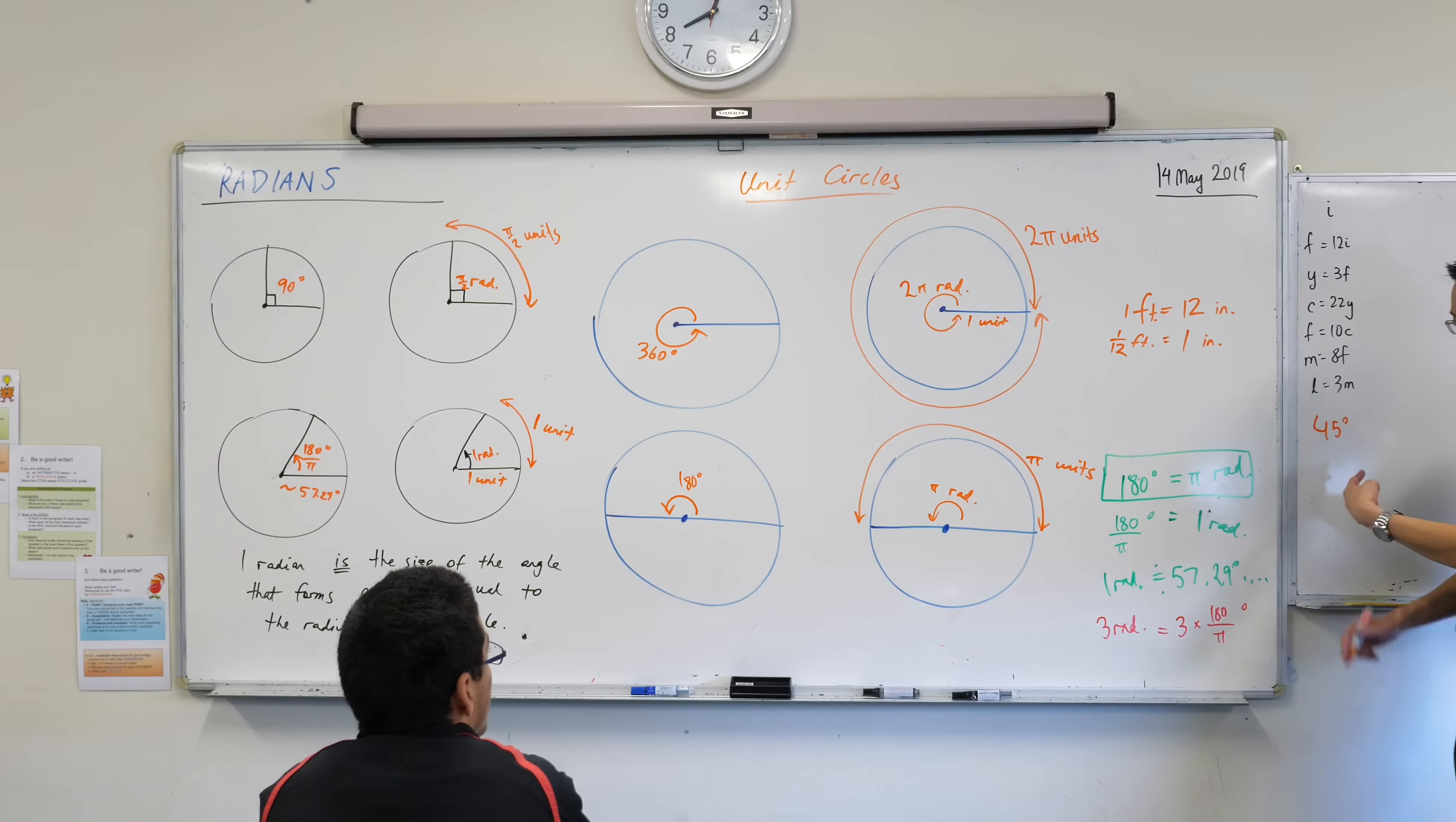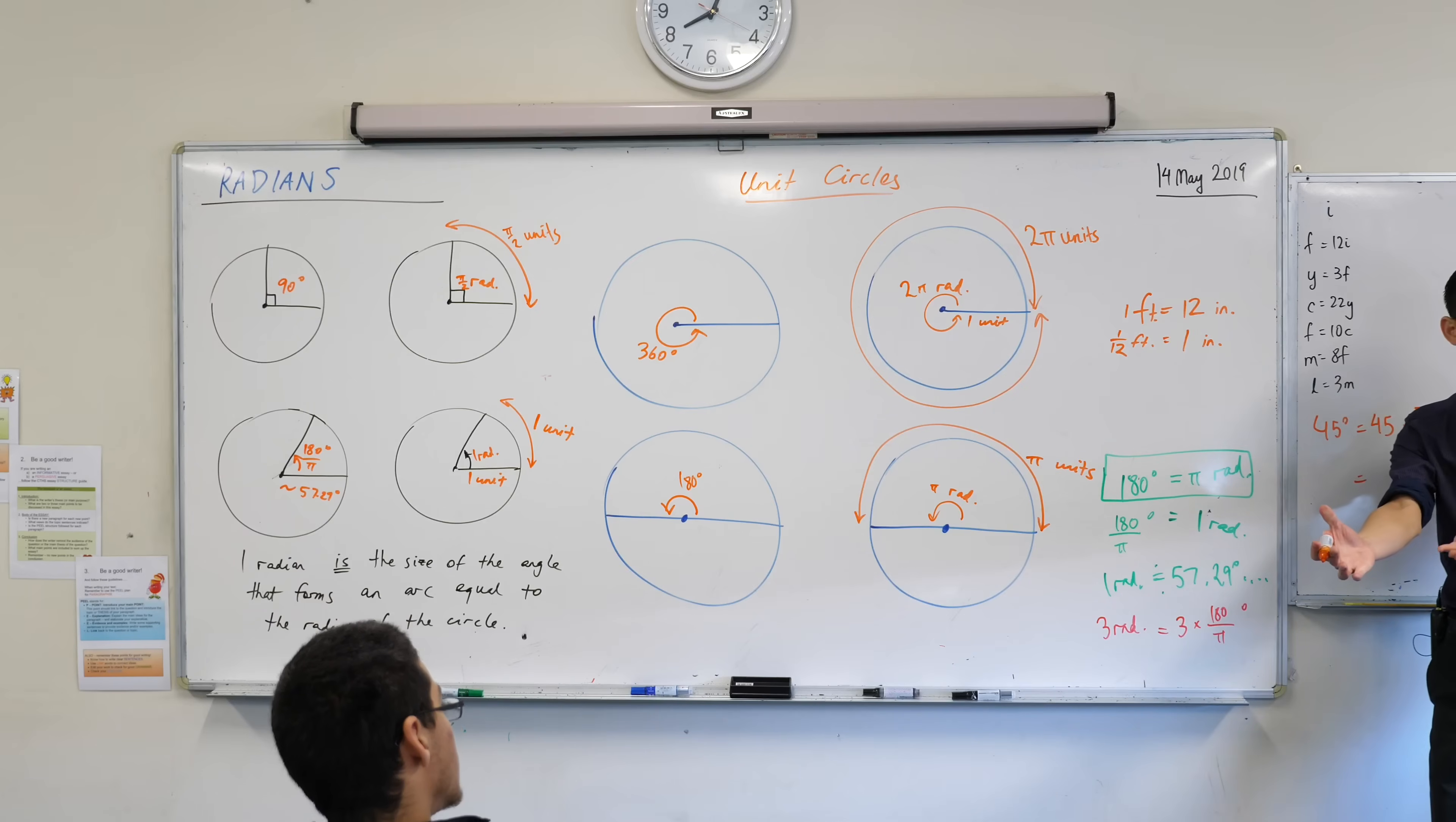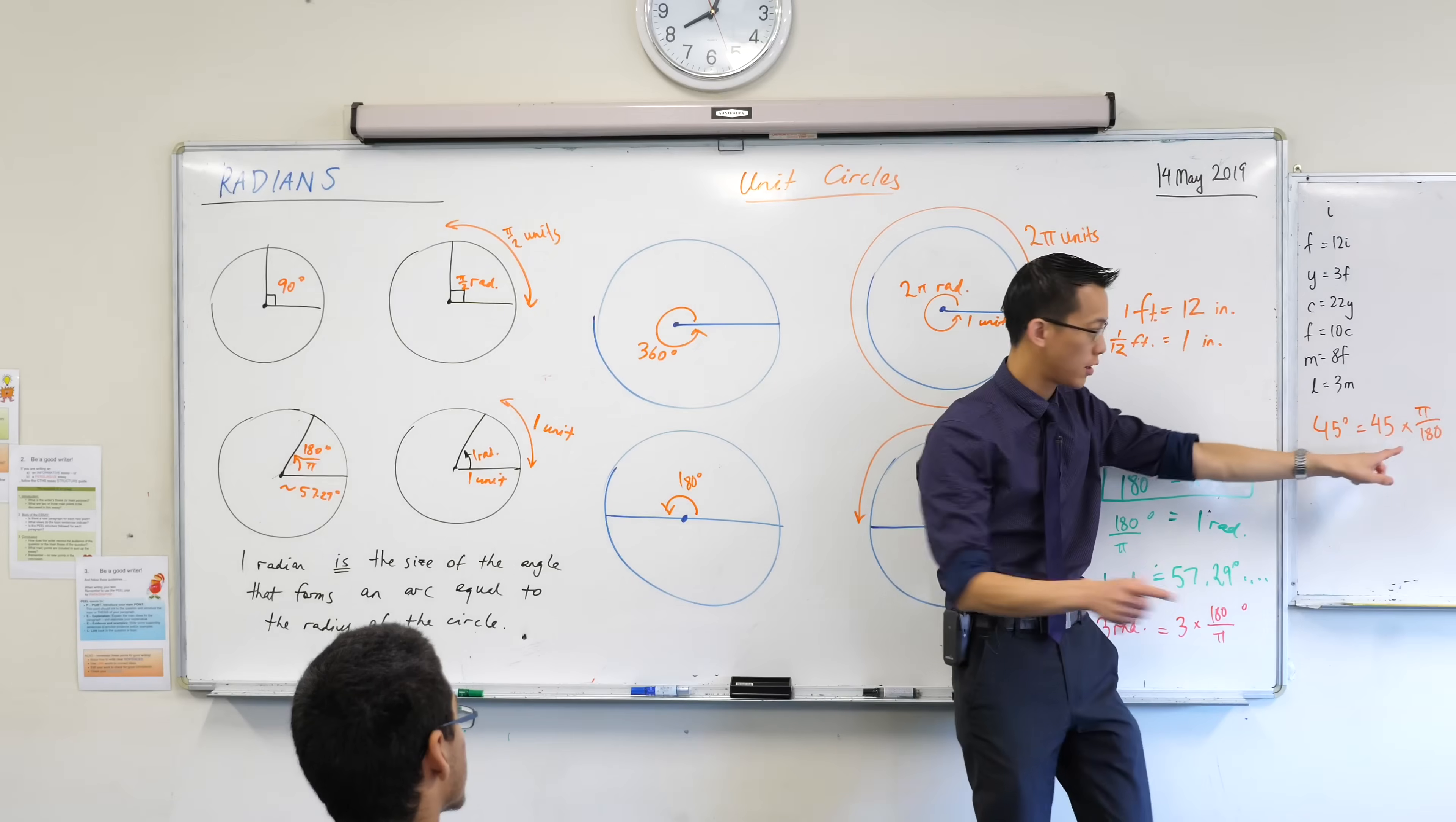If I wanted to turn this into radians, what I would say is take that 45, and instead of multiplying by 180 on π, because that takes you from radians to degrees, I want to go in the reverse direction. I'm going to multiply by the reciprocal, π on 180 instead of 180 on π. Now, you could pump that into your calculator, okay? But the problem is, your calculator is going to take π, it's going to turn it into decimals. You don't need to. Have a look.